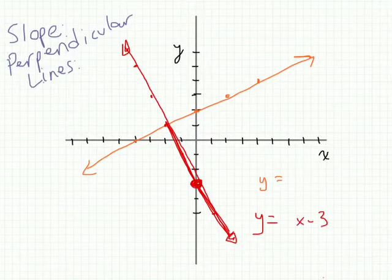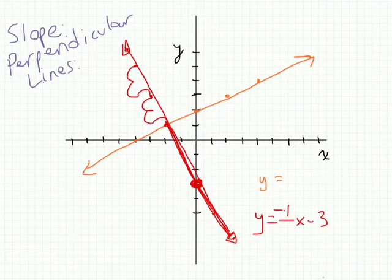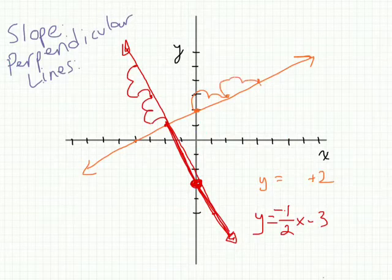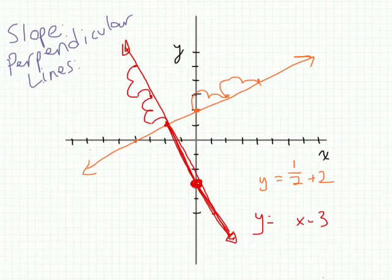Let's graph the slope. The red line actually moves down 2, to the right 1 — so the slope should be negative 2 over 1. Down 2 to the right 1, down 2 to the right 1. For the orange line, it comes in at y-intercept 2, and it moves up 1, to the right 2 — so its slope is 1/2.